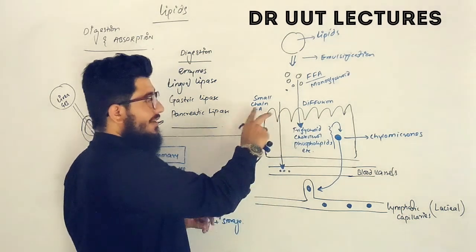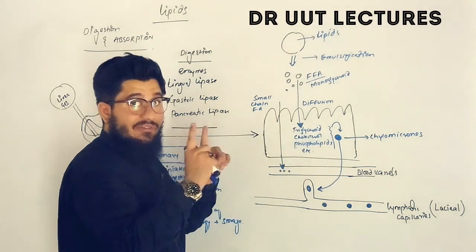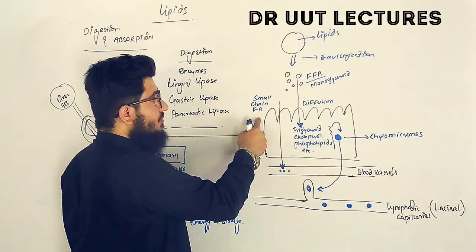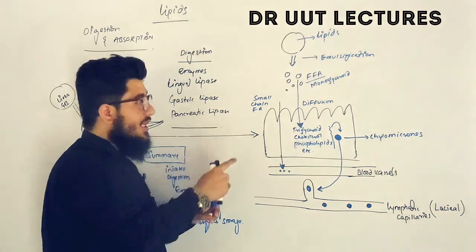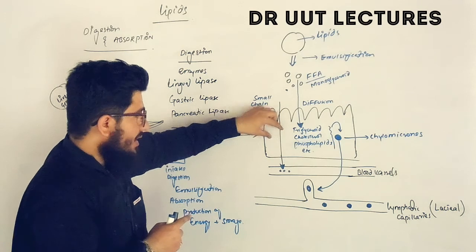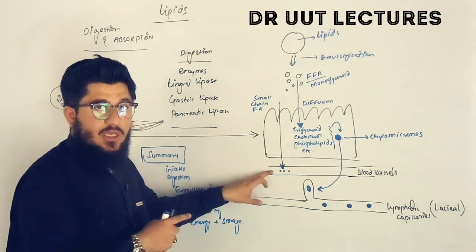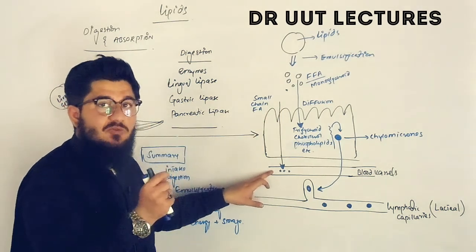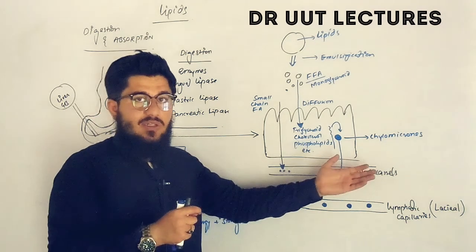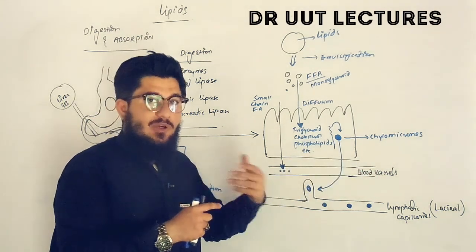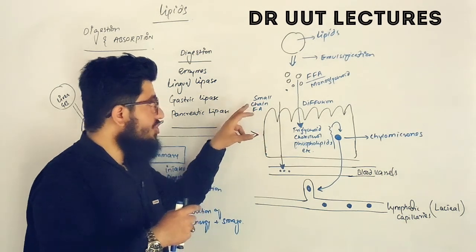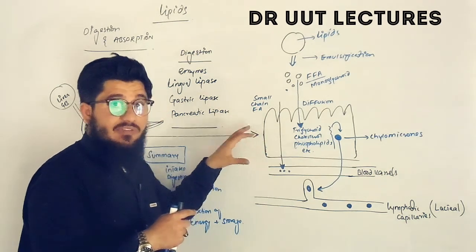From here, there are two different pathways. The first is that fatty acids which are of short chain are absorbed into the enterocytes and then into the blood vessels in a very easy, direct way. They move directly into the blood vessel and become part of the blood. This is how absorption of short-chain free fatty acids occurs.